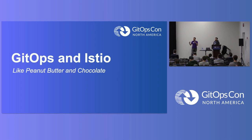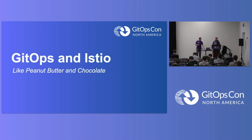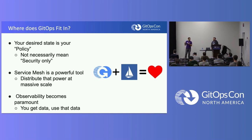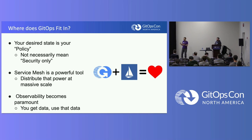That makes GitOps and Istio like peanut butter and chocolate — they go better together. If you're looking at your desired state, you can view that as almost like your policy. And when I say policy, I don't necessarily mean security exclusively — although that's going to be a big part of it — I'm talking about organizational policies more broadly.